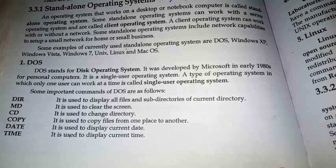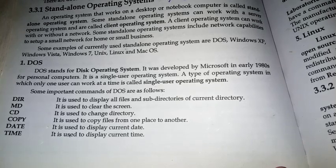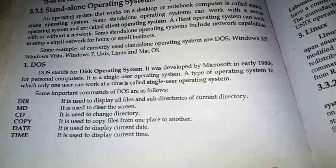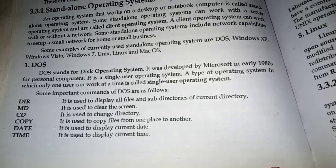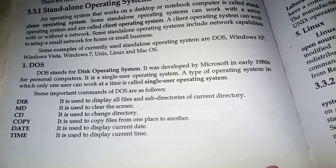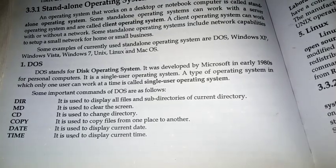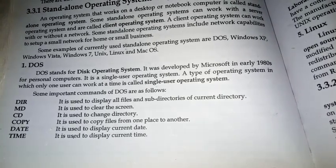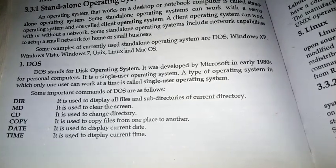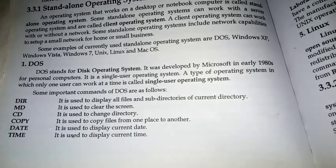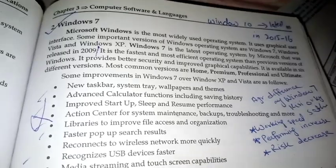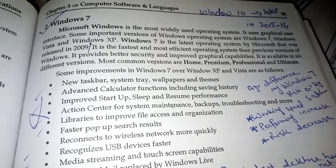DOS is a single-user operating system — a type of operating system in which only one user can work at a time. Some important commands of DOS are: DIR, MD, CD, COPY, DATE, and TIME. DIR is used to display all files and subdirectories of the current directory. MD is used to make a directory. CD is used to change the directory. COPY is used to copy files from one place to another. DATE is used to display the current date, and TIME is used to display the current time.